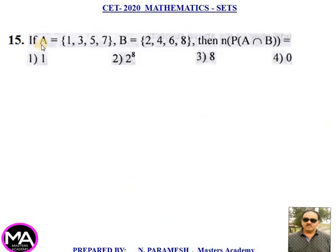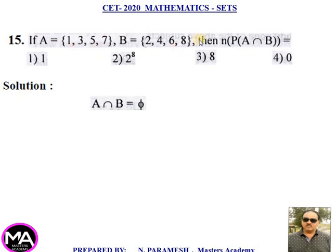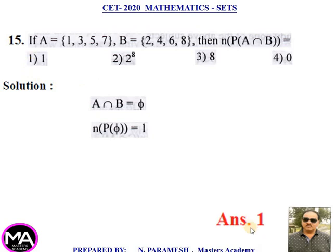15th question. If set A = {1, 3, 5, 7} and set B = {2, 4, 6, 8}, then N(P(A ∩ B)) = ? Four options are given. Solution: A ∩ B = null set, so N(A ∩ B) = 0. N(P(∅)) = 2^0 = 1. That is option first.